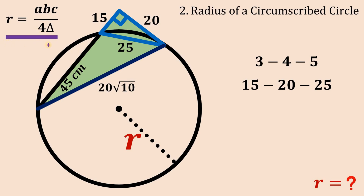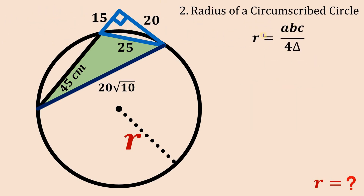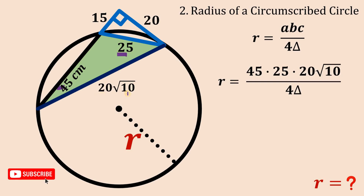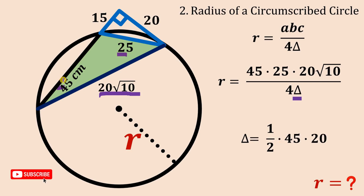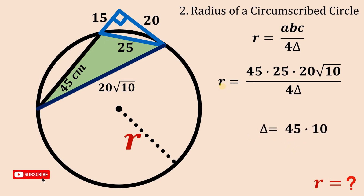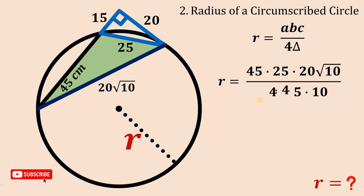Now we're ready to use the circumscribed circle formula. The sides a, b, and c of the triangle inside the circle are 45, 20, and 20 times the square root of 10. For the area of this triangle, we use one-half times base times height: one-half times 45 times 20, which equals 45 times 10. We then replace the area in the formula with 45 times 10.